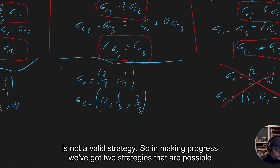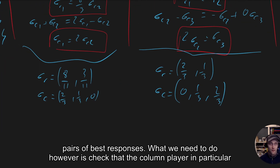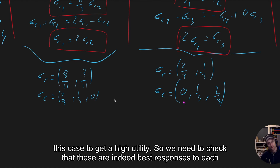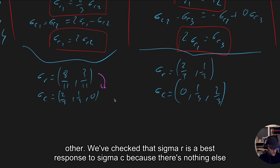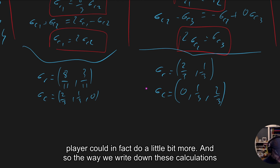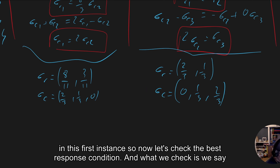We have two candidate strategy pairs remaining. However, we still need to check that the column player couldn't play their excluded strategy to get a higher utility. In scenario 1, we need to verify the column player has no incentive to play their third action. In scenario 2, we verify they have no incentive to play their first action. So we need to confirm these are indeed best responses to each other.